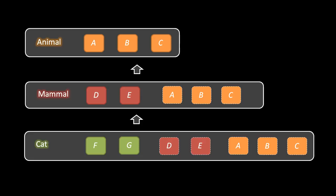If our language didn't have any kind of automatic inheritance mechanism, then to get the same effect, we would have to explicitly define the members A, B, and C in all three classes, and the members D and E in both Mammal and Cat. Doing this would not only be bothersome, but potentially error-prone, if we want to make sure that the definitions across the classes stay exactly the same.